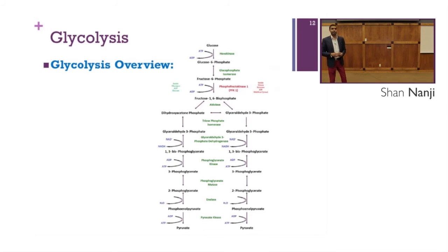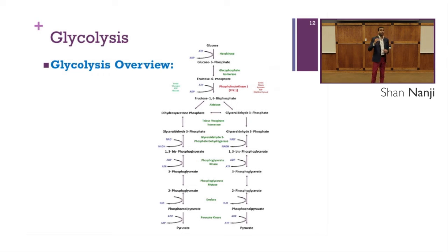Glycolysis occurs in the cytosol because some cells in our body — notably red blood cells — do not have mitochondria. Red blood cells use glucose for energy, so if glycolysis did not happen in the cytosol, red blood cells would have no energy and would die. Here is an overview of the full glycolysis pathway; we will go step by step through these enzymes and then do a full overview at the end.